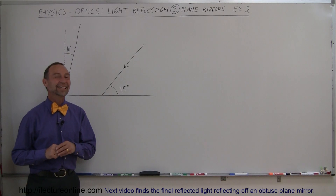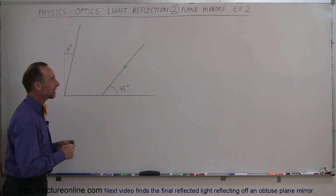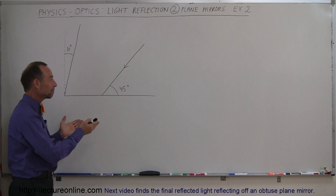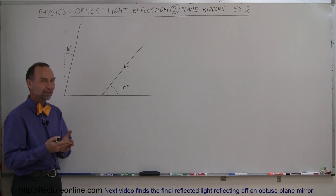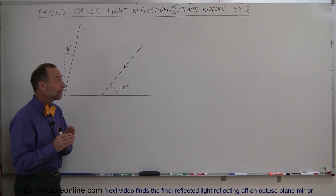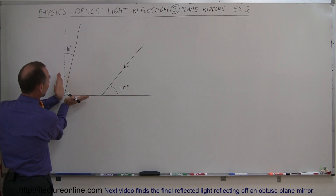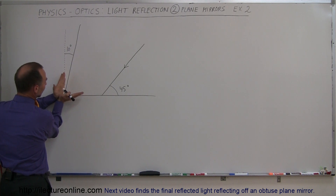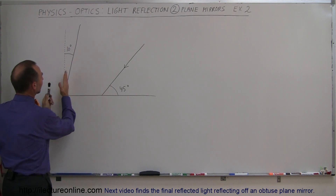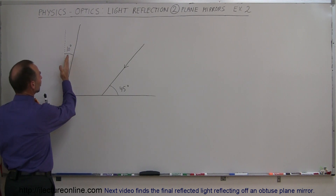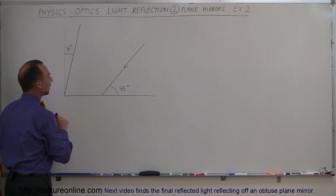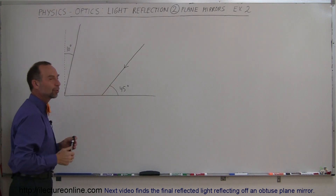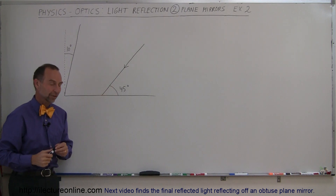Hi, welcome to our lecture online. Here we have our second example of how to deal with rays being reflected by plane mirrors, but in this case the two mirrors are not situated in such a way that they make a 90 degree angle. There's only an 80 degree angle because this mirror is tilted 10 degrees to the right. So what will happen to this ray as it bounces between these two mirrors?